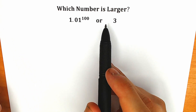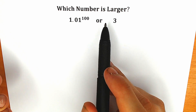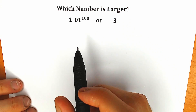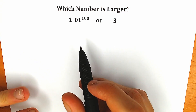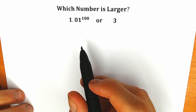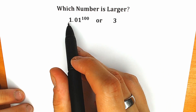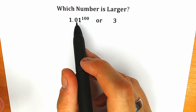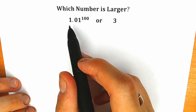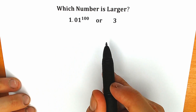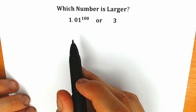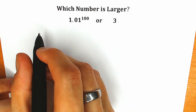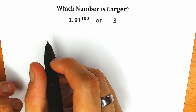Let's test our intuition — pause the video, write your answer, and write your solution down into the comment section. A lot of students may be thinking we just need to raise 1.01 to the power 100, but that's not the best way to solve it because we have 100 expressions to multiply. So how can we solve it? I recommend you look at the binomial expansion method.